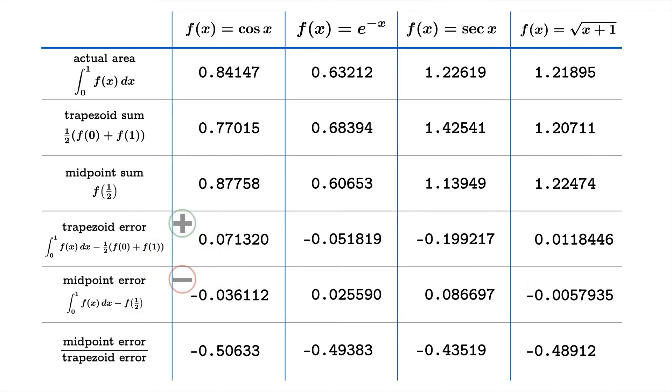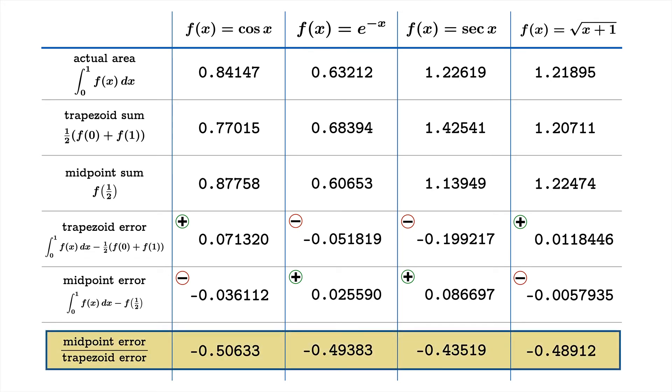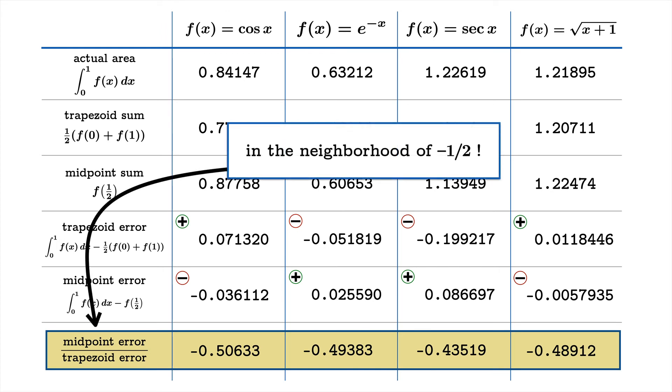And a few things to notice. Because the concavity did not change in any of these examples across the interval from 0 to 1, you can see that the trapezoid error and the midpoint error have opposite signs. One is always too large, one is always too small. And the other thing to notice is that the ratio of the midpoint error to the trapezoid error is pretty near, it's in the ballpark, of negative one-half every time.